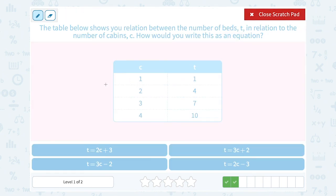The cabins, or the C column, is increasing by 1, from 1 to 2, from 2 to 3, and from 3 to 4. If I look at what's going on in the number of beds, or the T column, it looks like they're going up by 3. 1 plus 3 would give me 4. 4 plus 3 would give me 7. And 7 plus 3 would give me 10.